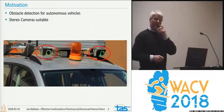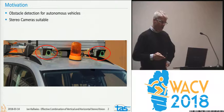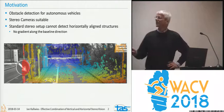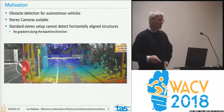One almost trivial observation, in hindsight, is that if you're using a horizontal stereo setup, it's very hard to see horizontal structures — like this boom barrier here, which is almost invisible in horizontal stereo. So the question is: what to do?